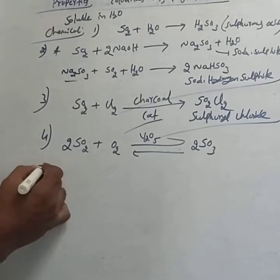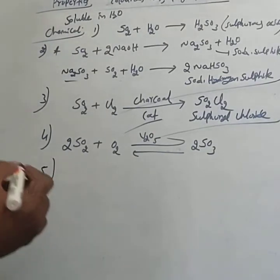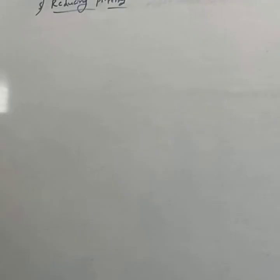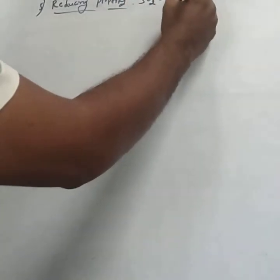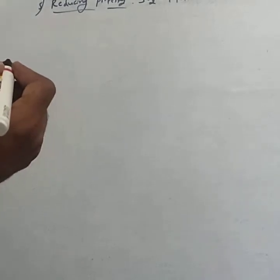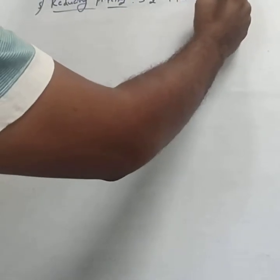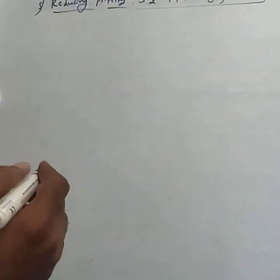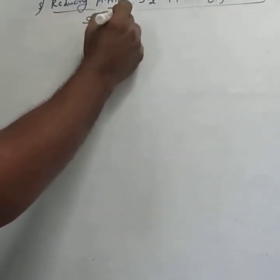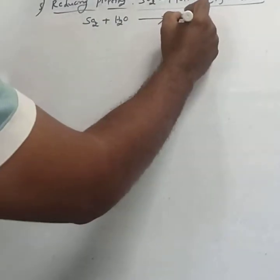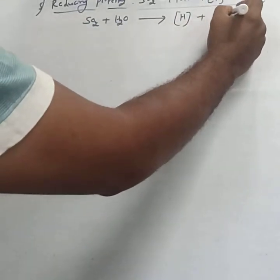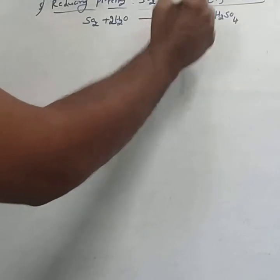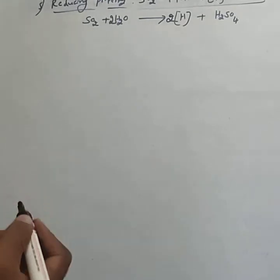This reaction is also important for completing equations. Sulfur dioxide behaves as a reducing agent. Why does it behave as a reducing agent? Because it donates nascent hydrogen in the presence of moisture. Only in the presence of moisture does sulfur dioxide behave as a reducing agent: SO₂ + H₂O → nascent hydrogen + H₂SO₄. Hence sulfur dioxide behaves as a reducing agent.